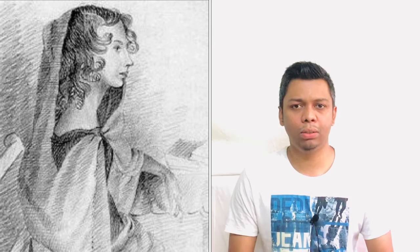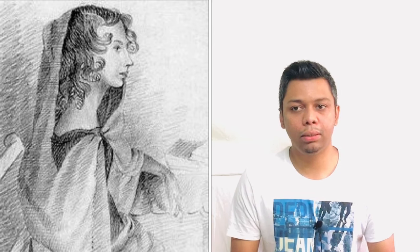Coming to the next writer, Charlotte Brontë used the pen name Currer Bell. She was born in 1816 and passed away on 31st March 1855. She was a great novelist and her major works include Jane Eyre, Shirley, Villette, and The Professor. She also contributed to writing alongside her sister Anne Brontë.